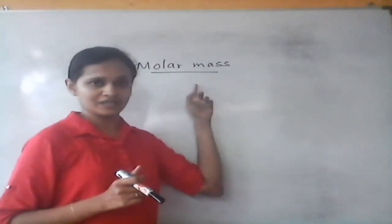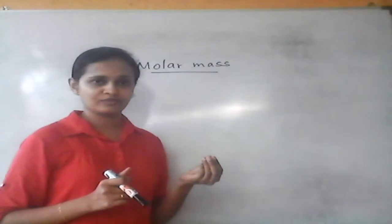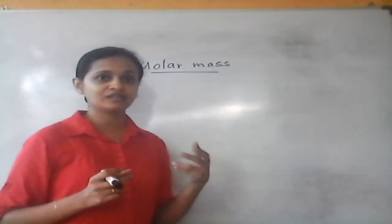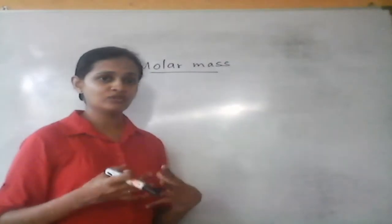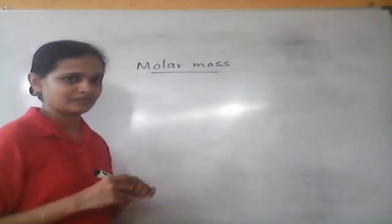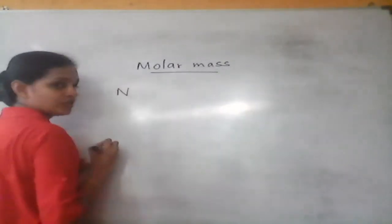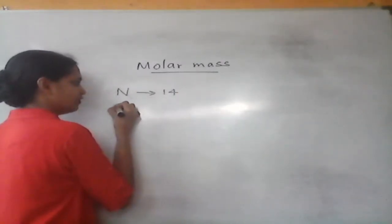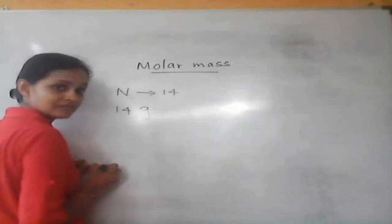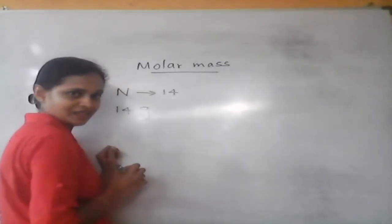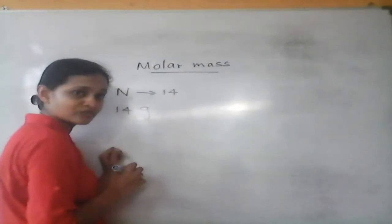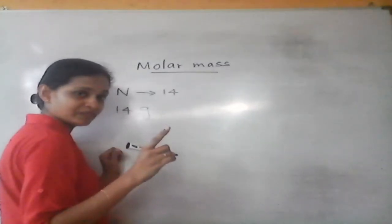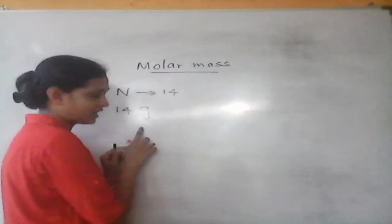Then what is the molar mass? Molar mass is the mass of any substance when we take one mole, or we can say the mass of one mole of any substance is known as molar mass. If we take an example, the relative atomic mass of nitrogen is 14. So I take 14 grams of nitrogen atoms. There you know it contains an Avogadro constant, or 6.022 into 10 to the power 23 number of nitrogen atoms, and it is equal to one mole of nitrogen atoms. Therefore, it is clear that the mass of one mole of nitrogen is 14 grams.